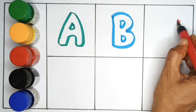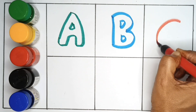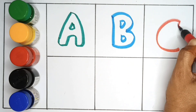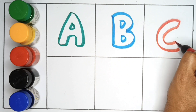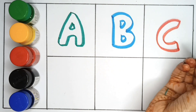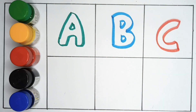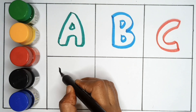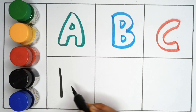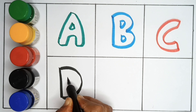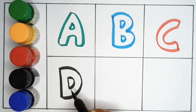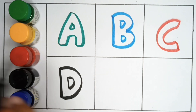C. C for cat, red color. D. D for dog, black color.